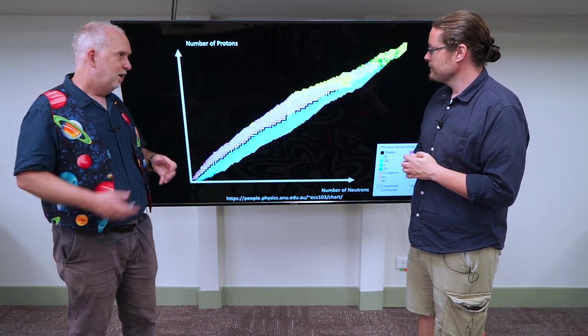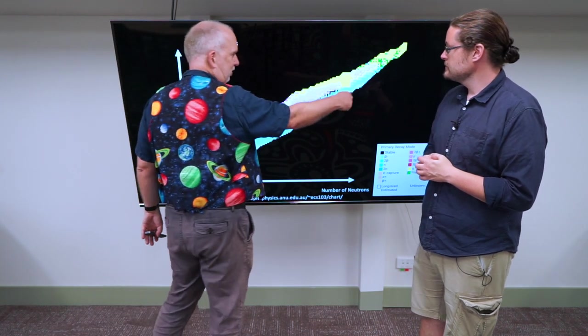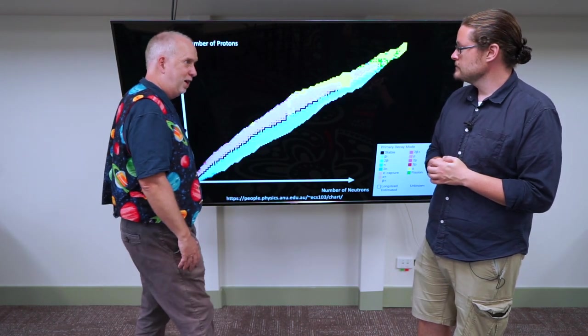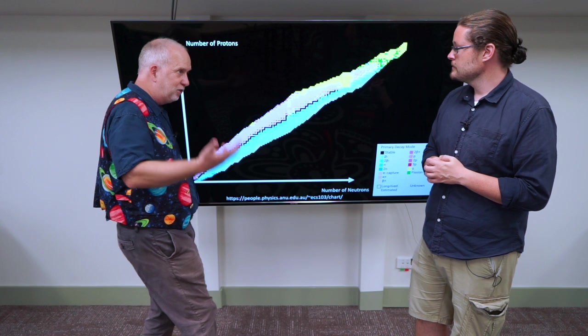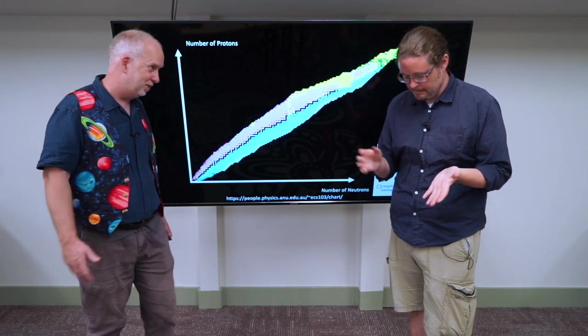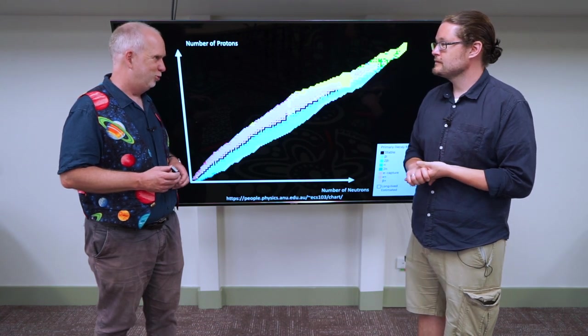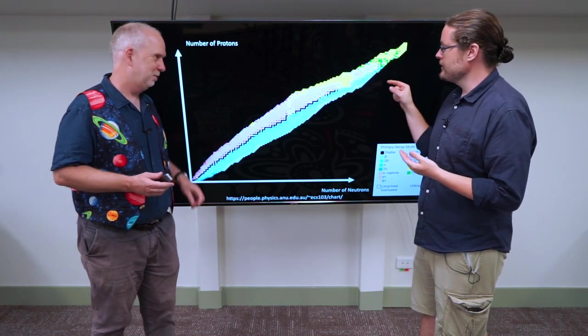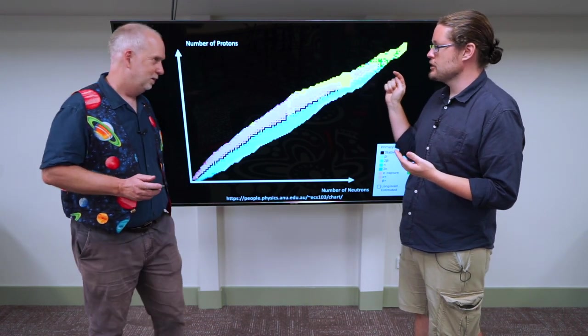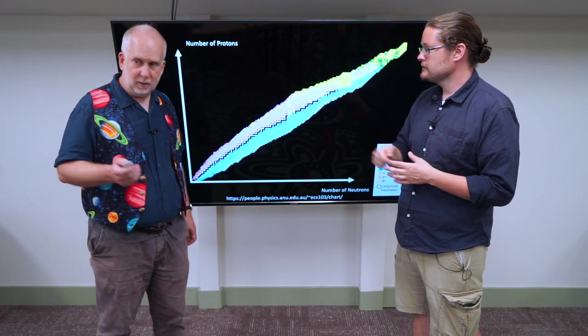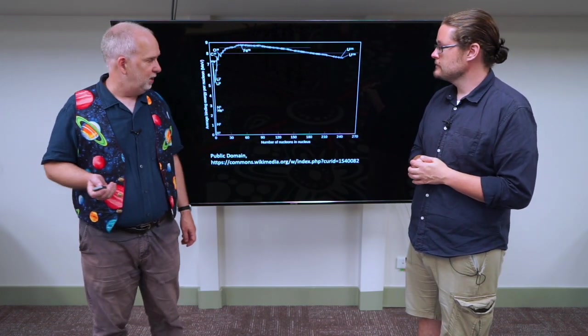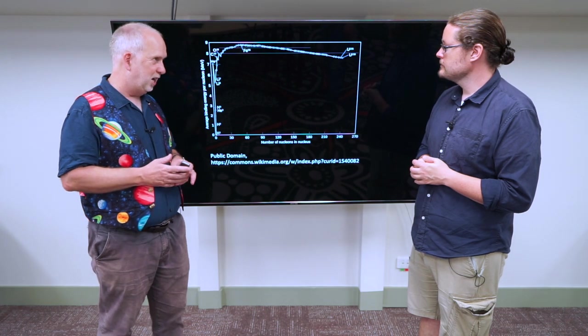So nuclear fission consists of taking things up around here and breaking them apart. They can either break apart by themselves, like all the things that Marie Curie discovered, or we can encourage them by hitting them with a few neutrons. So if you encourage them, you're then getting energy out. That's right.